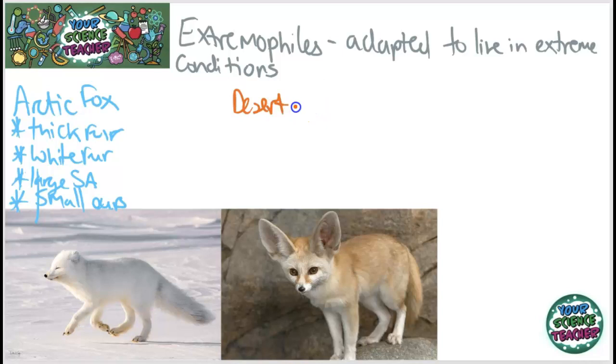Now over here, the desert fox, which is found in hot climates—extreme hot climates with not much water—has very different adaptations. It has thin fur so that it doesn't overheat. It has large ears and a small surface area so that it will lose more heat.